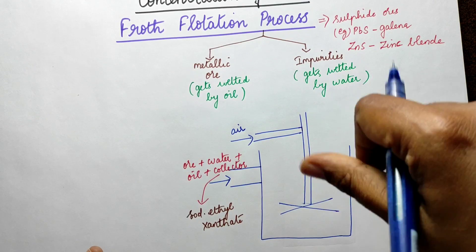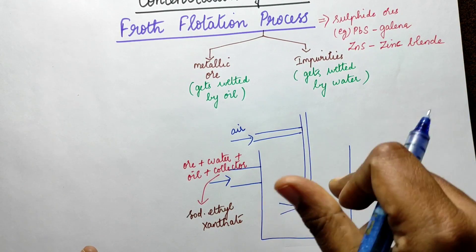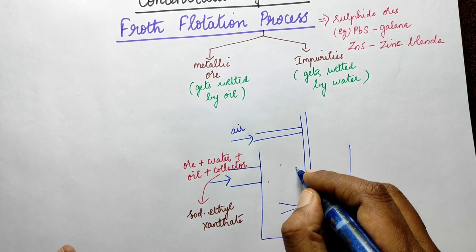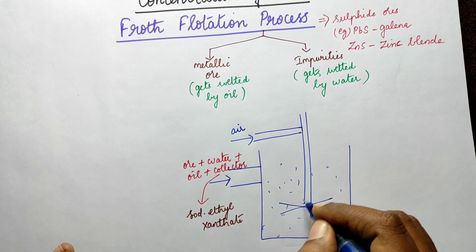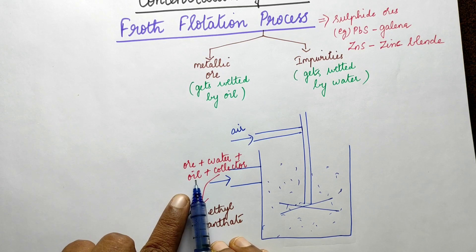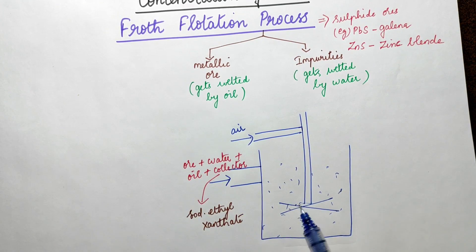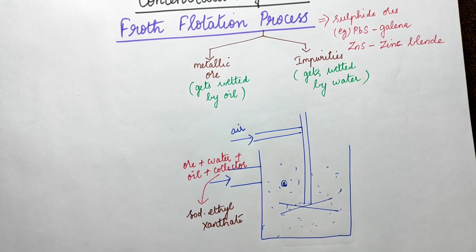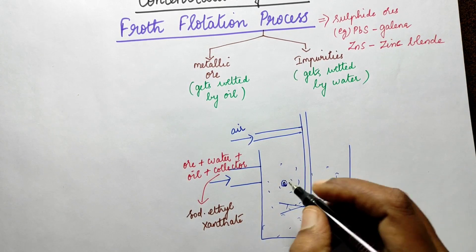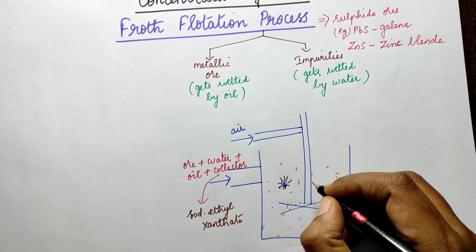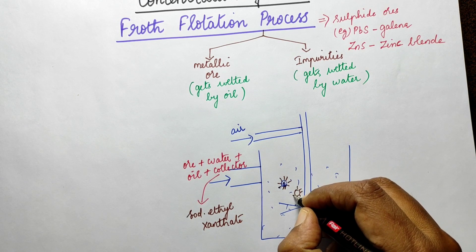A stirrer is used to agitate the mixture. With the compressed air supply and stirring action, the ore particles become covered by the collector — sodium ethyl xanthate. The collector coats the ore particles, making them hydrophobic so they attach to air bubbles.